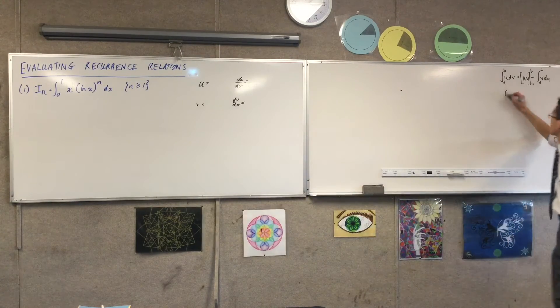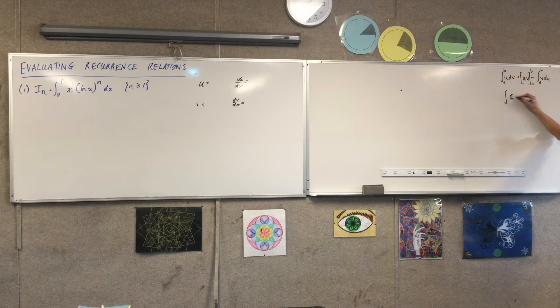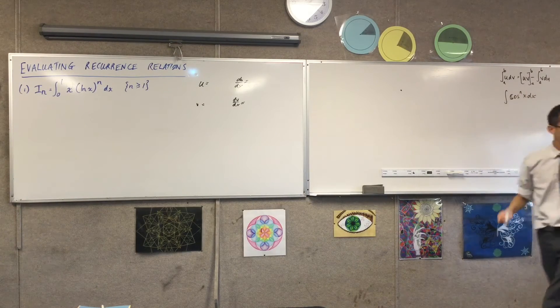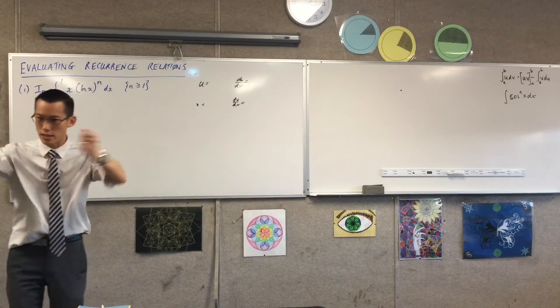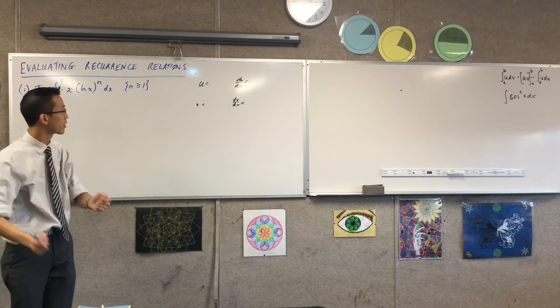I mean for example, one of the ones we looked at was this guy. Actually I think I did cos with you first. We looked at this, and the reason we had to split it up is because integration by parts requires a product, doesn't it, to make it work.